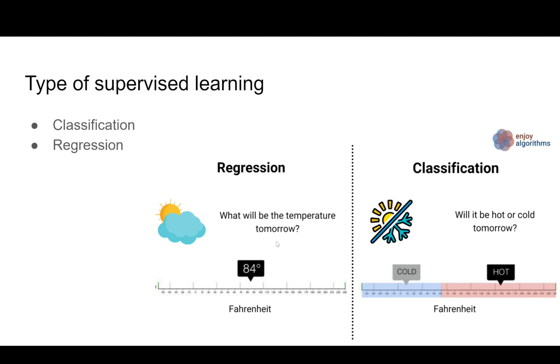In regression, we're trying to detect the exact temperature of the future weather. Regression will be useful for solving the equation what will be the temperature tomorrow. It will say 84 degrees Fahrenheit. Regression problems give us the exact value, whereas classification gives us the class, either cold or hot.